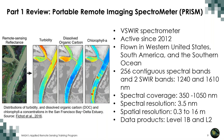Another visible shortwave infrared spectrometer we discussed in our first session was PRISM, which stands for Portable Remote Imaging Spectrometer, active since 2012. It has flown throughout the Western United States, South America, and the Southern Ocean. It has 256 continuous spectral bands over 350 to 1,050 nanometers and 50 shortwave infrared bands at 1,240 and 1,610 nanometers. Data results in Level 1B and 2 products downloadable from their data portal. An example shows how PRISM can be used to monitor water quality in the San Francisco Bay Delta estuary.